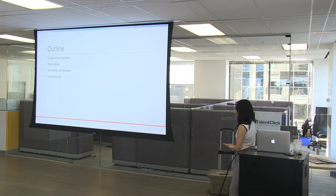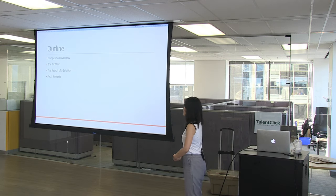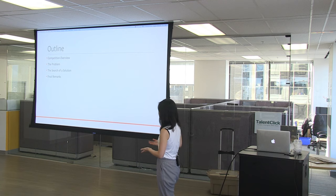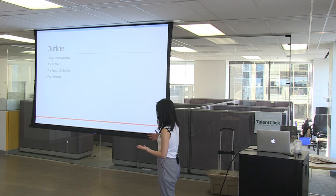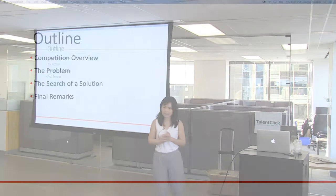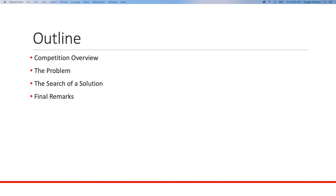Just a little bit of an outline. We're going to have a competition overview, then talk about the problem we're trying to solve, then we'll discuss the search for a solution — what most people do when they tackle this problem and what the winning solution is. There will also be some final remarks. I wrote this presentation in a tutorial style so that by the end you should be able to participate in this competition too.